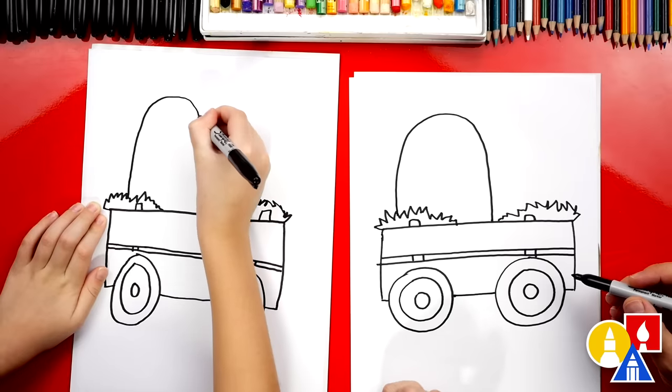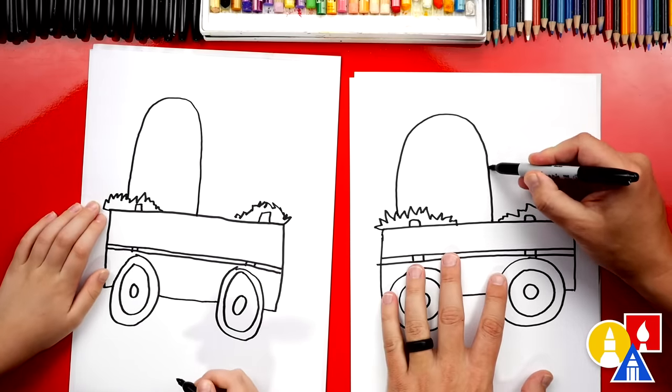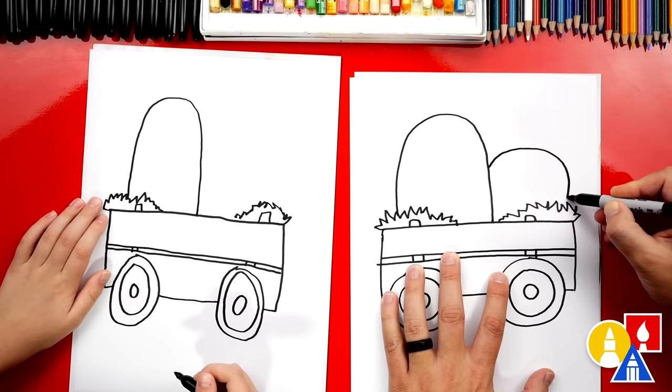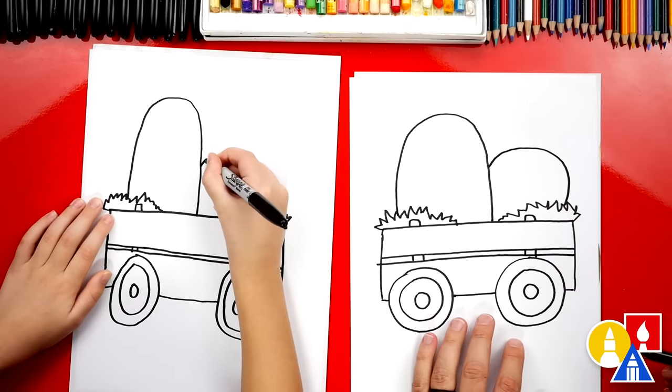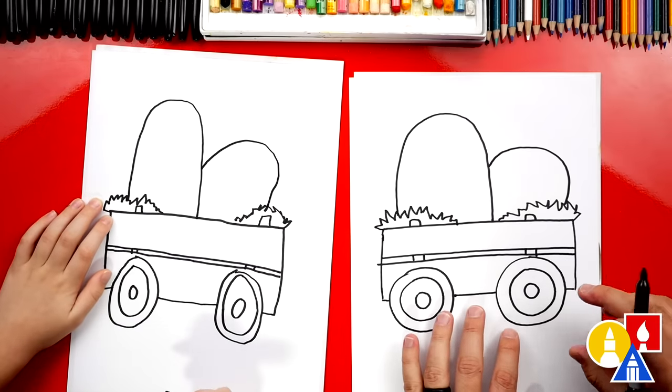And then let's draw another one that's smaller. I'm gonna draw it coming out of this side like this and then back down. You could even add more pumpkins, but we'll leave it just like that.